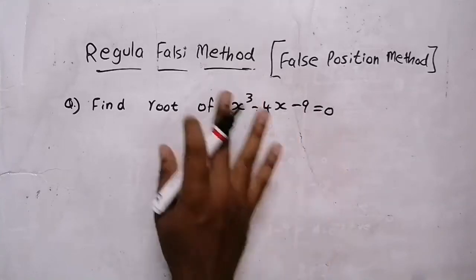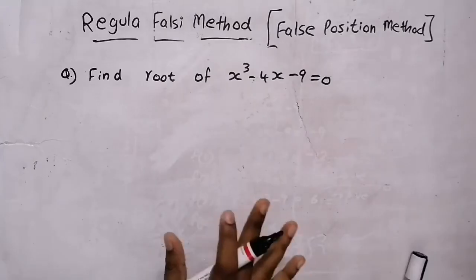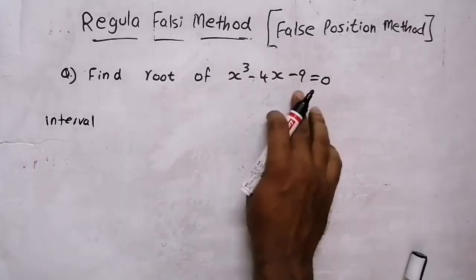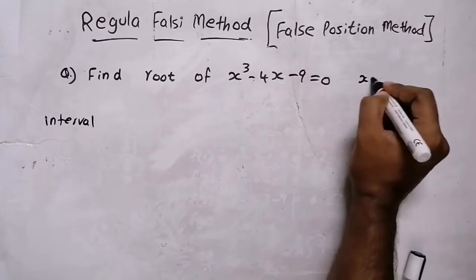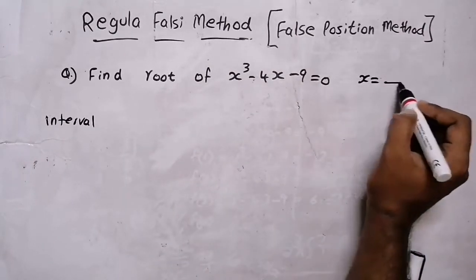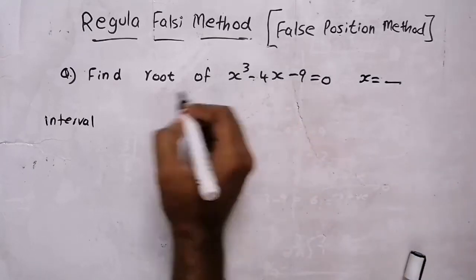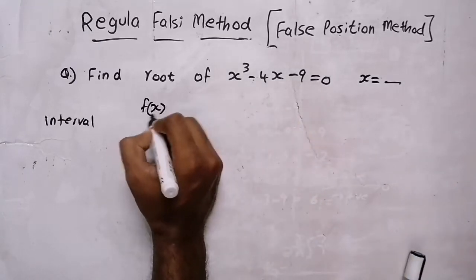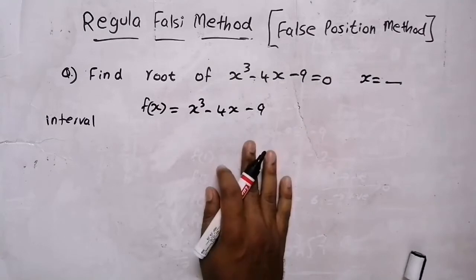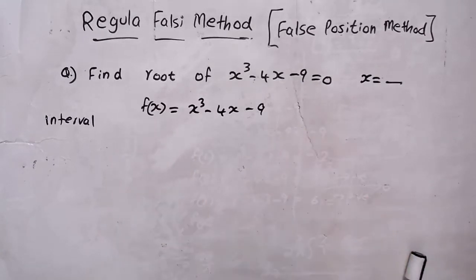Today we are going to solve this non-linear equation using the Regula Falsi method. The first step is to find the interval. We will get one value for x that lies within a certain interval. For that purpose, we write the equation and substitute x as 0, 1, 2, 3, and so on.